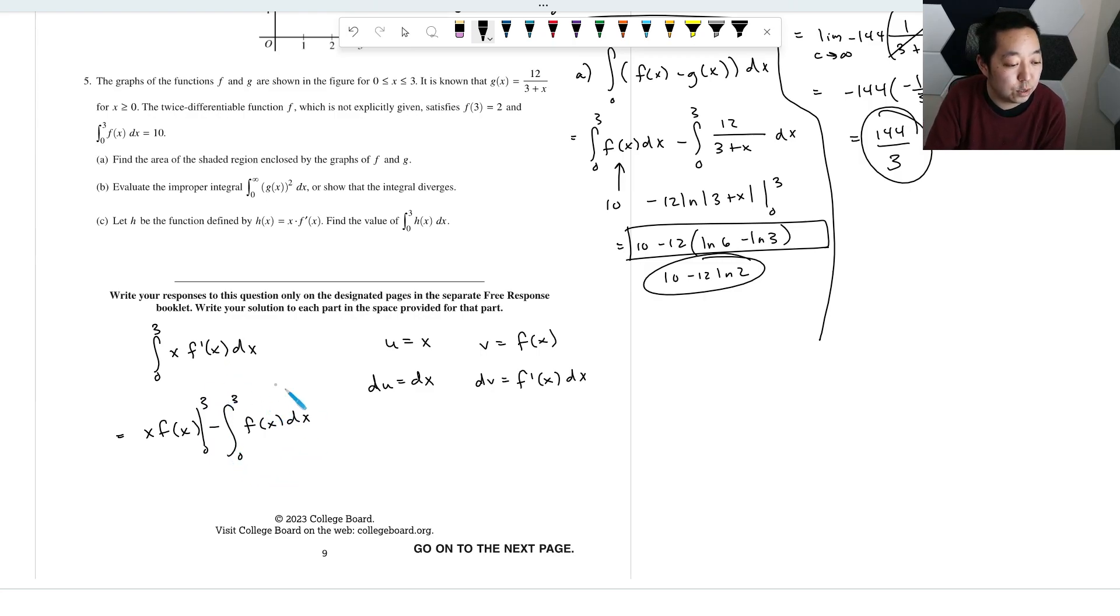All right. So the integral from zero to three, this part we know is 10. So then this is, we just plug in for this guy. It's going to be three times F of three minus zero times F of zero minus this guy right here, which is 10. So that part is zero. What is F of three? F of three, they told you F of three is two. So it's going to be three times two minus 10, which is going to be six minus 10, which is negative four. And there, that's that one.